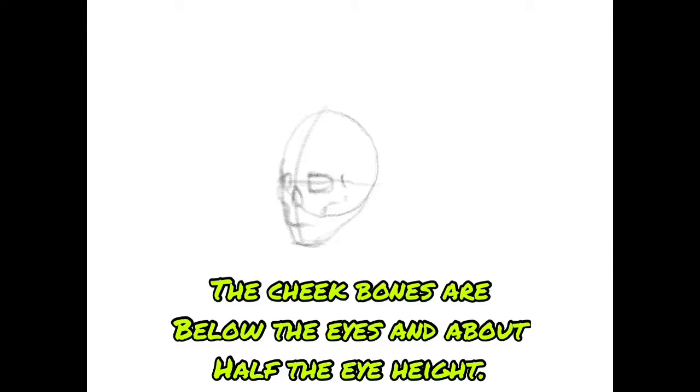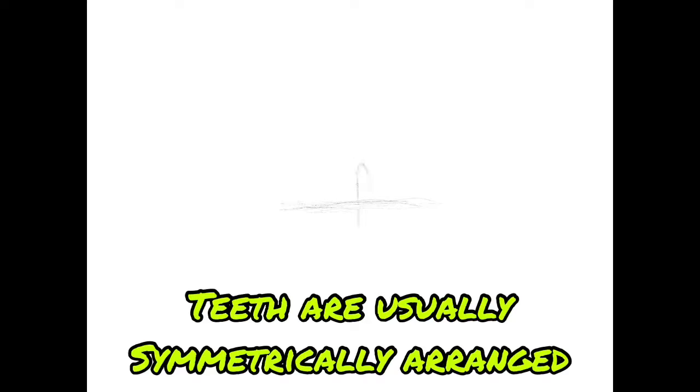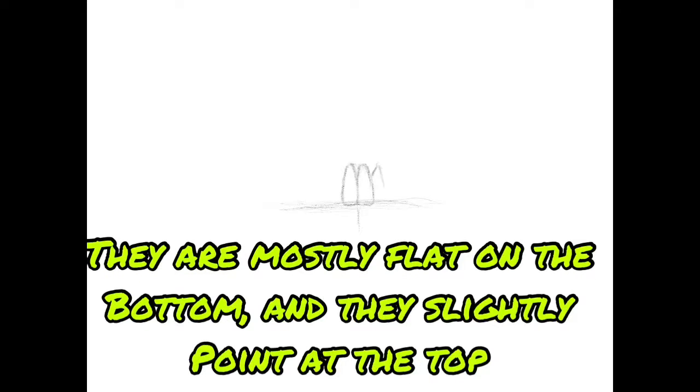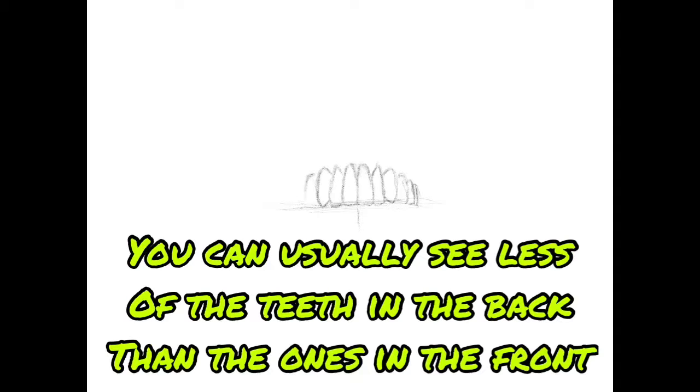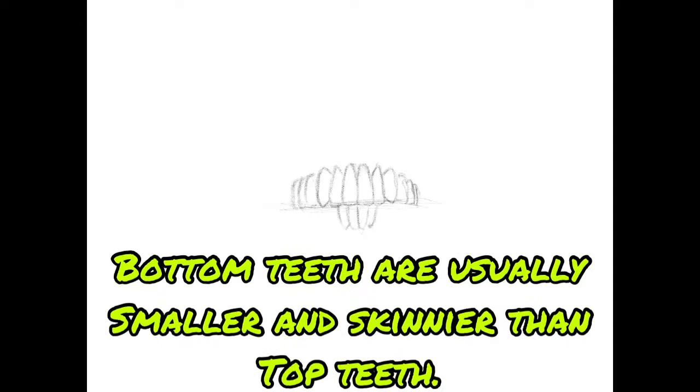The cheekbones are below the eyes and about half the eye height. Teeth are usually symmetrically arranged. They are mostly flat on the bottom and slightly point at the top. You can usually see less of the teeth in the back than the ones in the front. Bottom teeth are usually smaller and skinnier than top teeth.